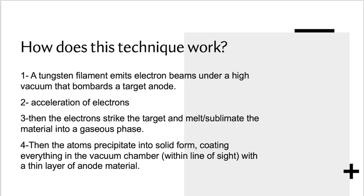The electrons strike the target and melt the material into a gaseous phase. After that, the material will turn into a solid form and coat everything in the vacuum chamber.